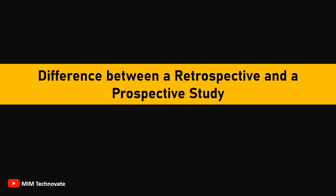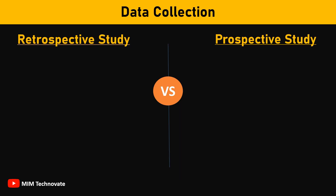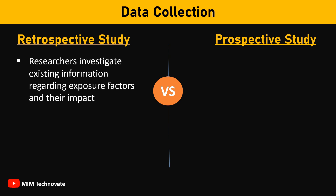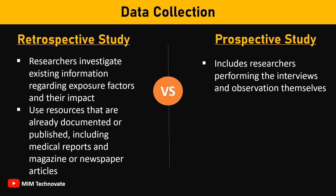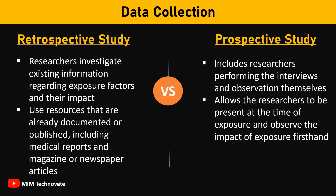Difference between a retrospective and a prospective study — Data collection: The primary difference between retrospective and prospective studies is data collection. In a retrospective study, researchers investigate existing information regarding exposure factors and their impact, using resources that are already documented or published, including medical reports and magazine or newspaper articles. In a prospective study, data collection includes researchers performing the interviews and observations themselves, allowing them to be present at the time of exposure and observe the impact firsthand. In a prospective study, there are likely no records of the incident of interest because it involves events that have not yet occurred.